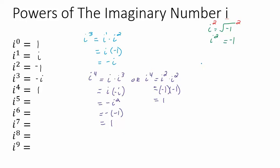For i to the fifth, the easiest way is to peel off one i, leaving i times i to the fourth. You could also do i to the third times i to the second, or i to the first times i to the fourth — different combinations will give you i to the fifth. Since i to the fourth is 1, that just gives me i.